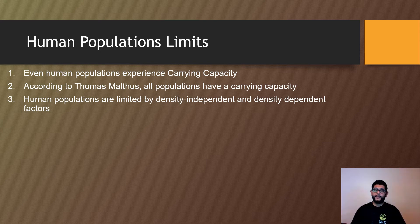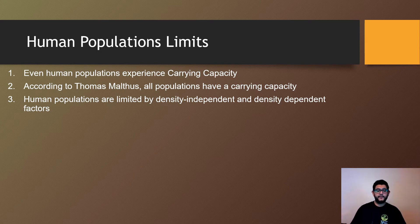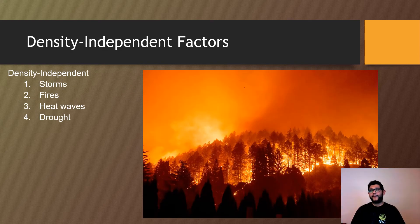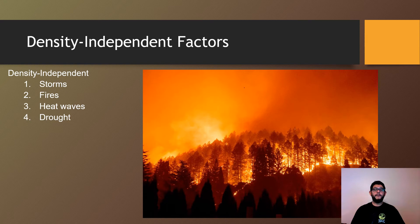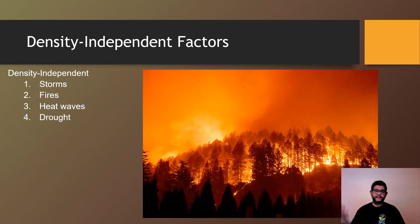So what do we mean by that? A density independent factor would be like a wildfire. So some species can be limited by fire, by their habitat. Humans can be limited by our range too. So if there's too much fire or drought or heat wave or hurricanes, that's going to limit where we live and it's not really going to play a factor of how many of us there are. That's what density independent means. There's not a number of individuals affecting these. These just happen. Think of these as forces of nature.